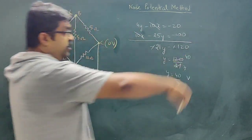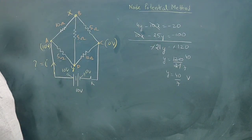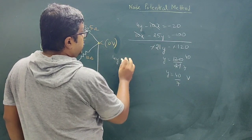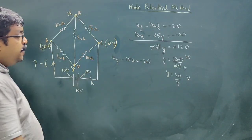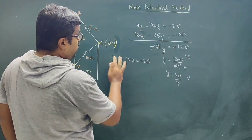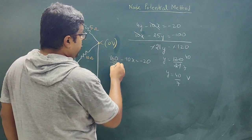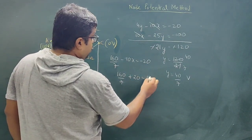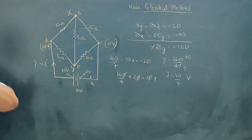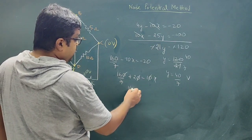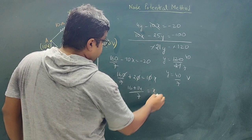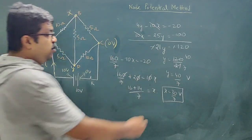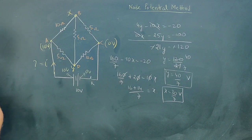Substituting Y equals 40 by 7 into 4Y minus 10X equals minus 20: 4 times (40/7) minus 10X equals minus 20, giving 160/7 minus 10X equals minus 20. Rearranging: 10X equals 160/7 plus 20 equals 160/7 plus 140/7 equals 300/7, so X equals 30 by 7 volt. Therefore Y equals 40/7 and X equals 30/7.